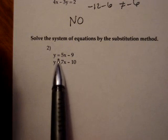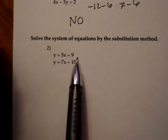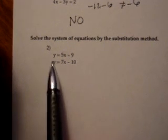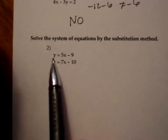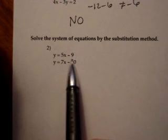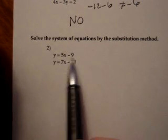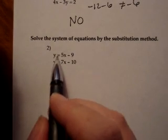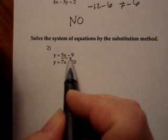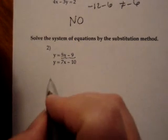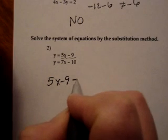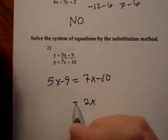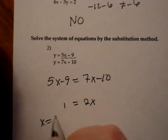That equal sign is telling you that these are two different names for the same entity or quantity. I can call the thing y, or I can call it 5x minus 9. They're the same thing. So instead of the y in the second equation, I'm going to put y's other name, 5x minus 9. 5x minus 9 equals 7x minus 10. Then you just solve. So I get 2x equals 1, so x equals a half.